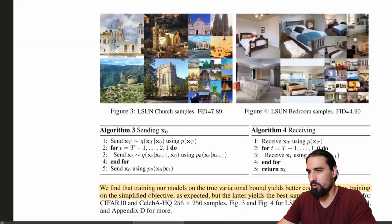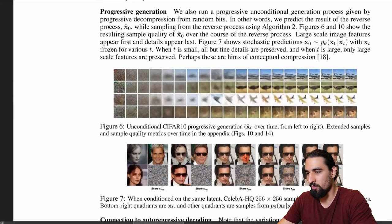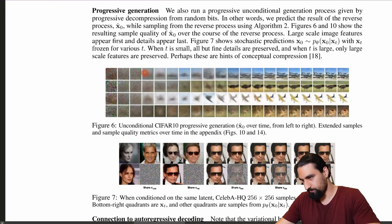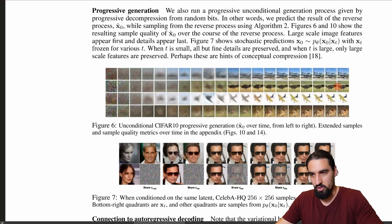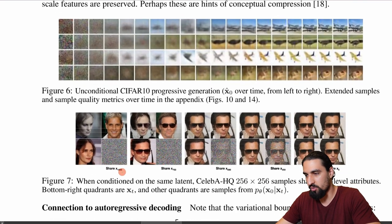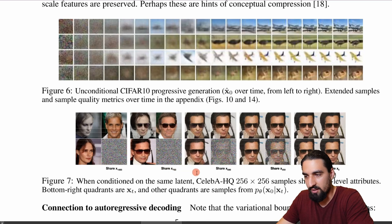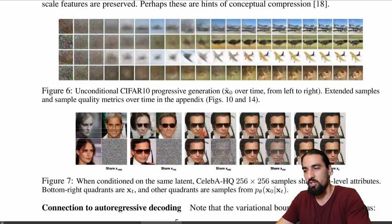Let me show you some images they get from the model. You can see how the diffusion process looks like in practice: you start with a noisy image and gradually keep denoising it until you get a sampled image from the underlying data distribution. They also show that depending on which latent you start from — if you start from x_1000, three independent reverse processes give three very different images, but if you start from x_500, the three independent reverse processes lead to quite similar images.